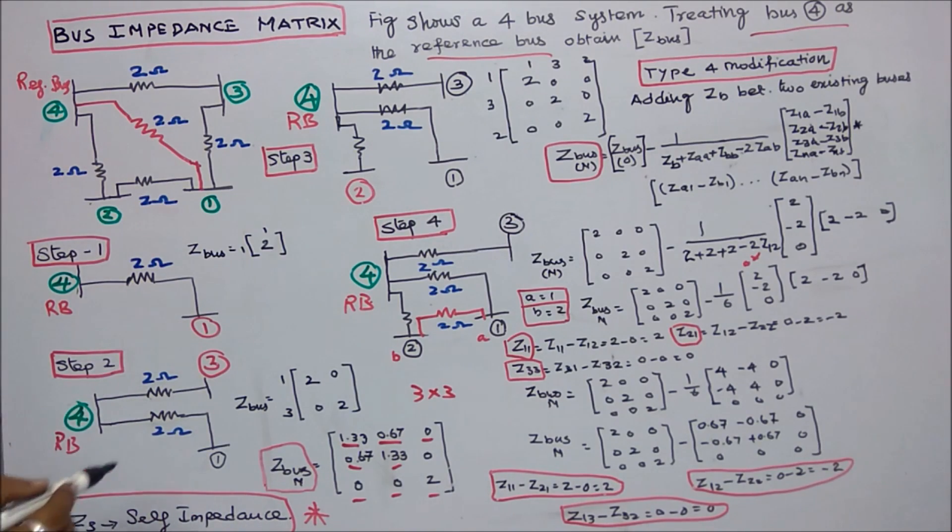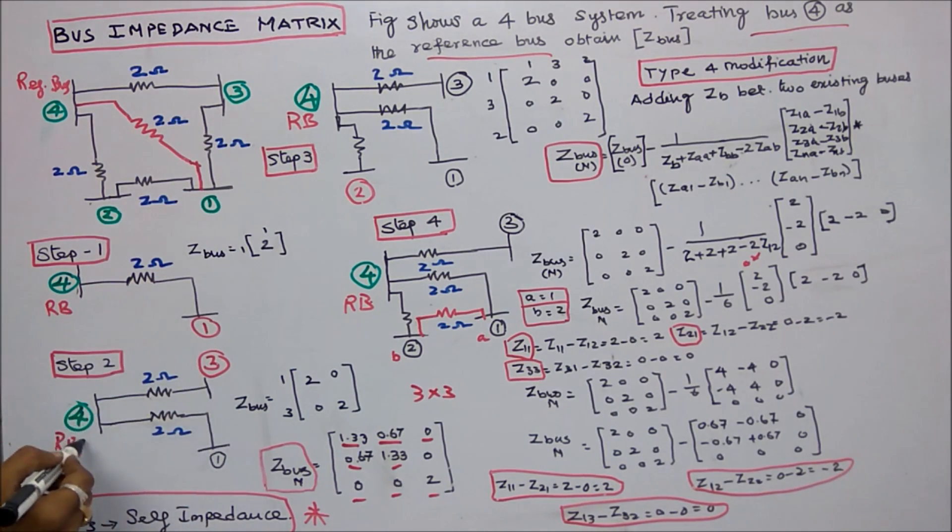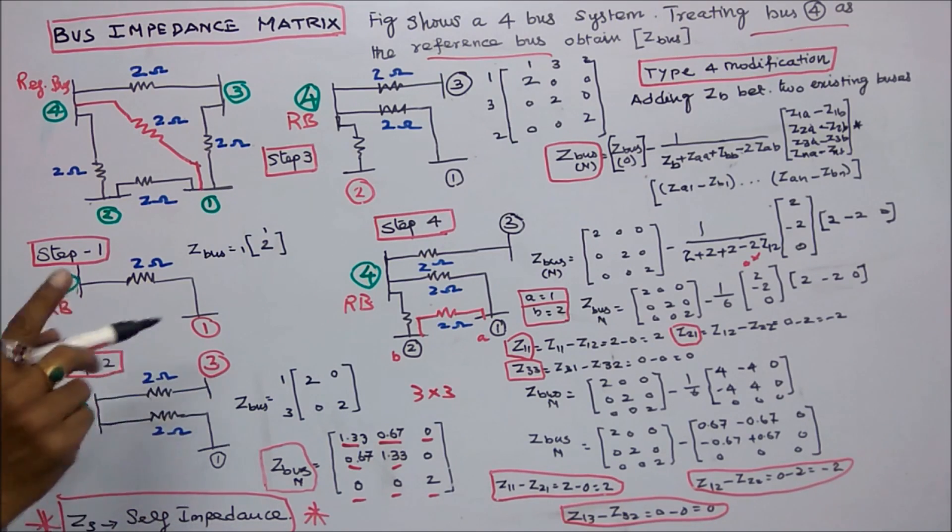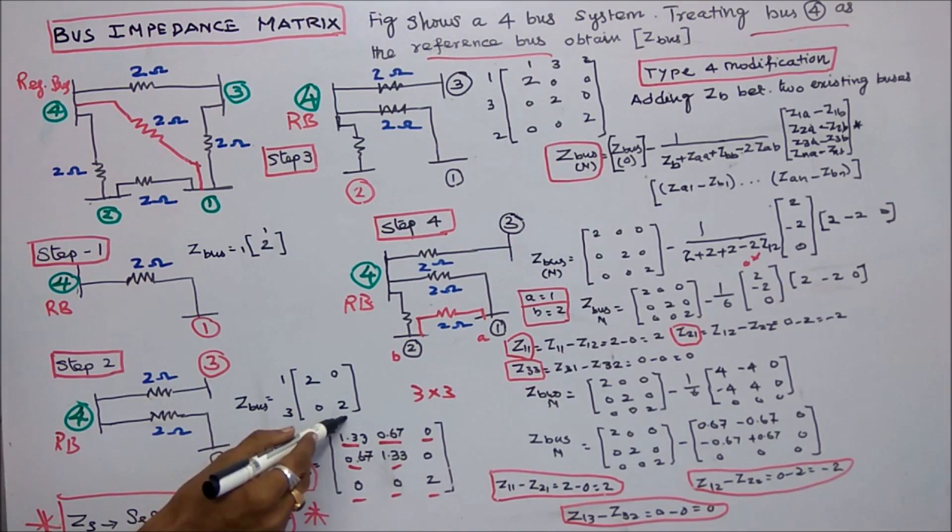Step 2: Now I am adding bus 3, new bus, to the reference bus 4. This impedance is 2. Now I got a 2 by 2 matrix. Z11 is equal to 2, Z33 is equal to 2.